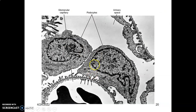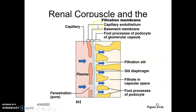Under the electron microscope, this is the glomerular capillary — fenestrated capillary endothelium lying on the basal lamina. The podocytes lie on the basal lamina, and the space between the podocytes forms the filtration slits. So the filtration membrane is composed of capillary endothelium lying on basal lamina and podocytes lying on basal lamina. The two fused basal laminae form the basement membrane, and in between the foot processes are your filtration slits.